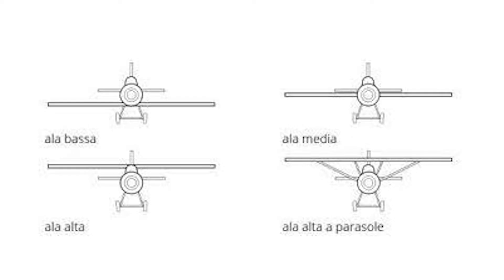A seconda della posizione e della forma dell'ala, si riconoscono diverse tipologie. Un'ala bassa viene adattata per alte velocità; anche se meno efficace dell'ala media, risulta facile mantenere la continuità strutturale dell'ala.